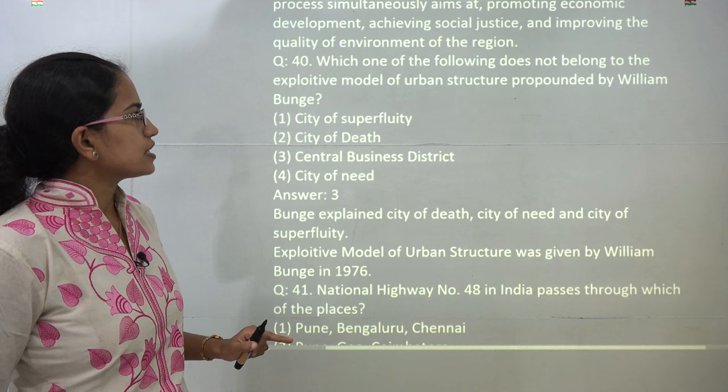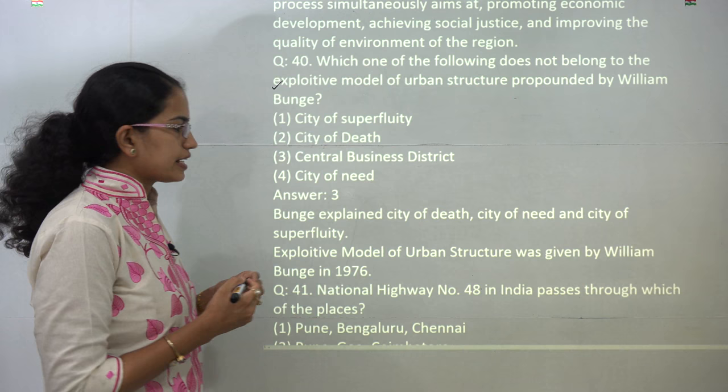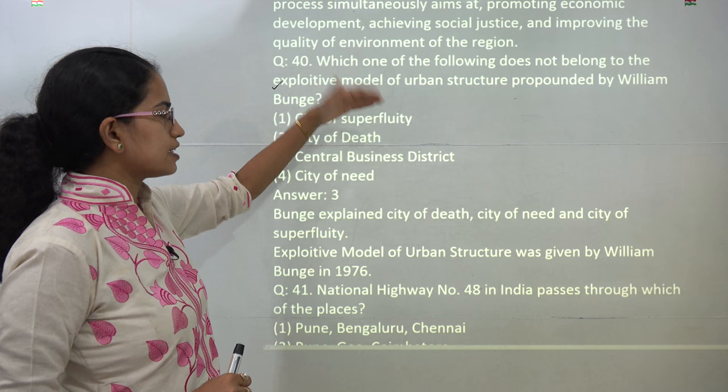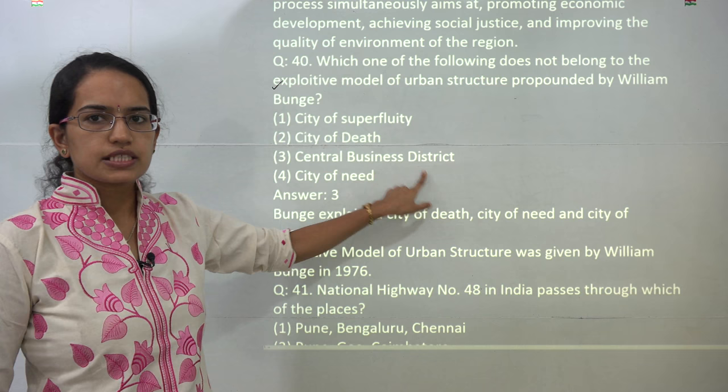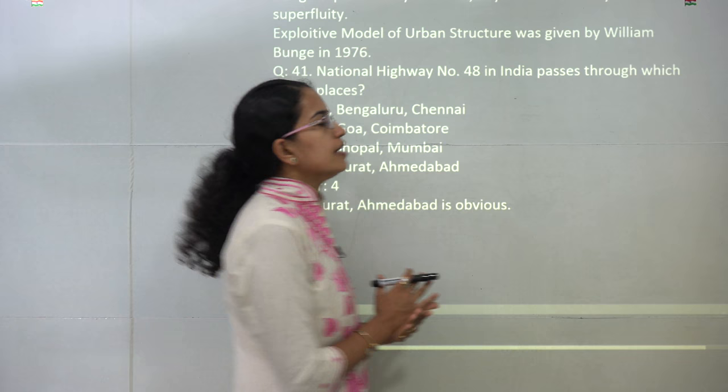Bush gave the exploitative model of urban structure and divided the state into three parts: the city of death, the city of need, and the city of superfluity. He did not talk about the central business district. So central business district is the answer here.